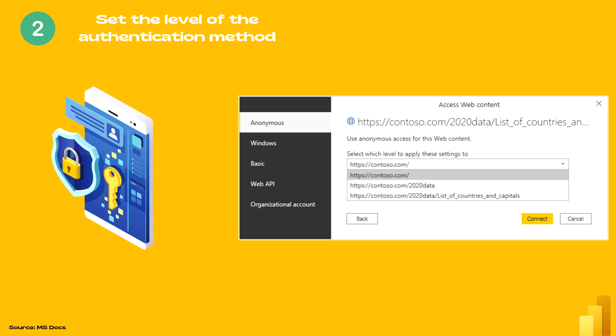Now let's discuss setting the level of authentication method. This depends on what kind of data source you are trying to access — whether you want to access it at a folder level, subfolder level, or the complete website level, which is the topmost level. For example, with a URL like https://contoso.com/2020data/listofcountries, the default setting for authentication would be at the top level, that is https://contoso.com. However, if you need access specific to a folder or subfolder, you can select that level and then click Connect.